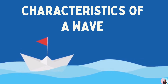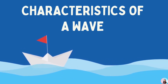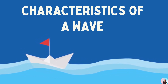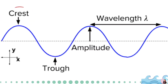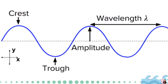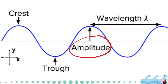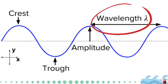Let us now proceed with the characteristics of a transverse wave. Take note of the following terms. First, the highest part of a wave is called a crest, while the lowest part of a wave is called a trough. The height of a crest or depth of a trough measured from the equilibrium position is called the amplitude. The distance between crest to crest or trough to trough is called a wavelength.